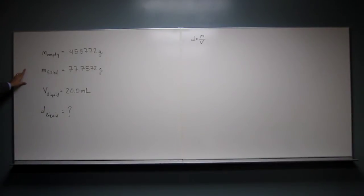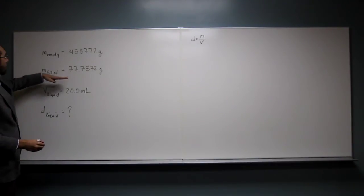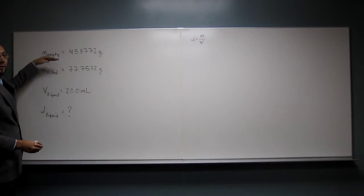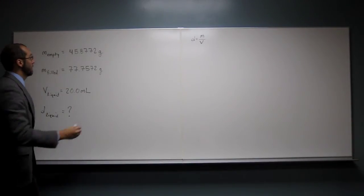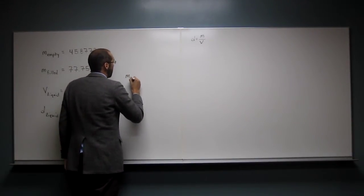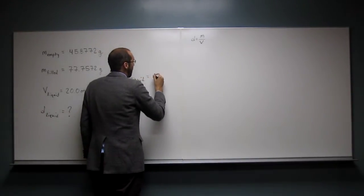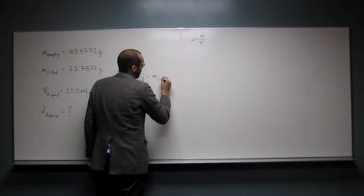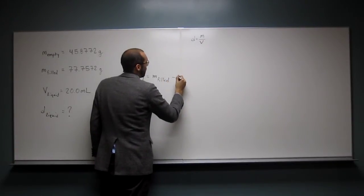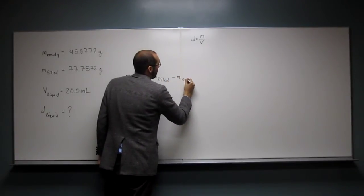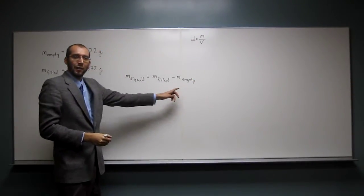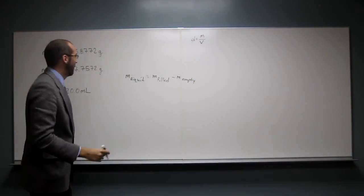Okay, so how do we get the mass of the liquid? We take the filled mass, subtract it from the emptiness, okay? So the mass of the liquid is going to be the mass of the filled cylinder minus the mass of the empty cylinder. Does that make sense? Because what's in it is the liquid, right?